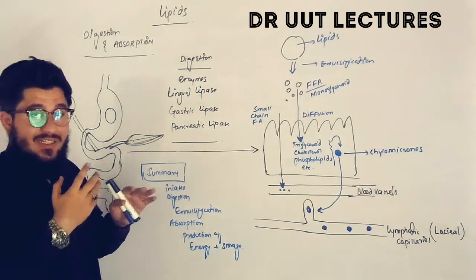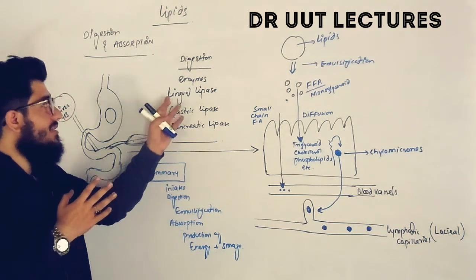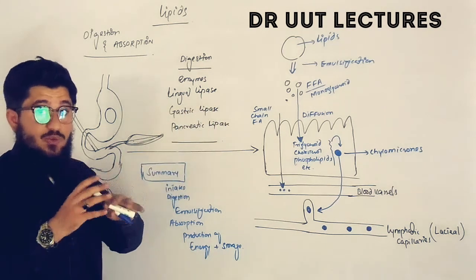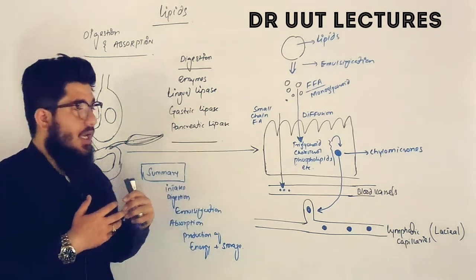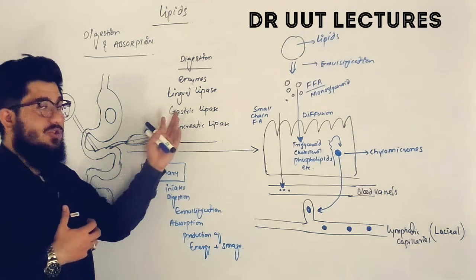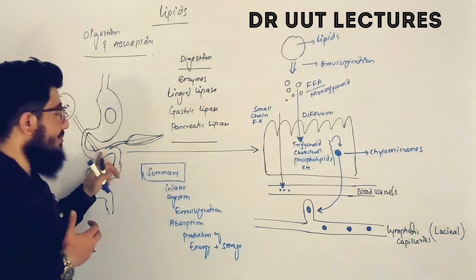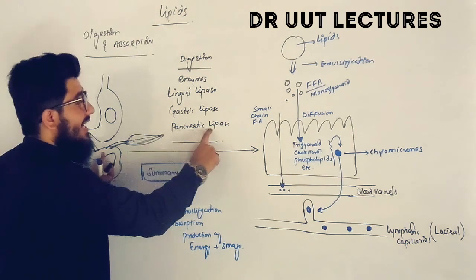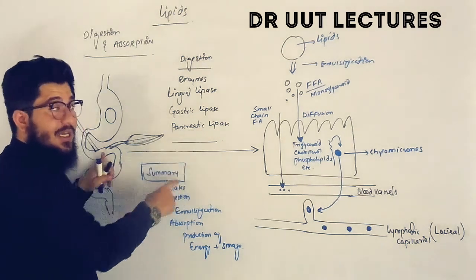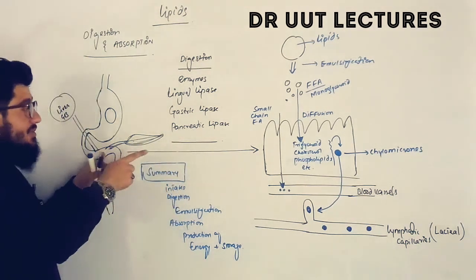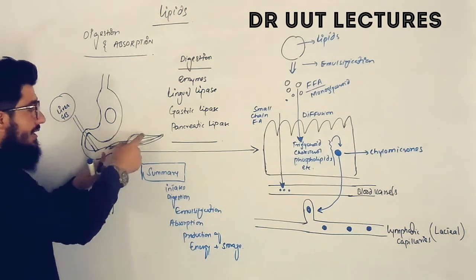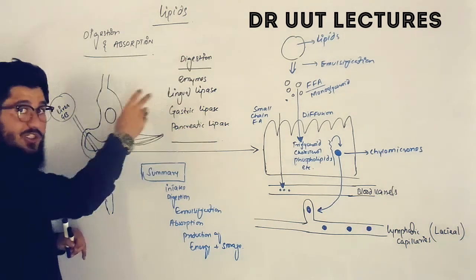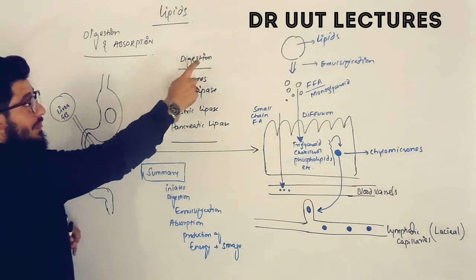In the mouth, we have digestive enzymes known as lingual lipase — these are the enzymes that act on lipids. In the gastric region, we have gastric lipase. And in the small intestine, there is an enzyme known as pancreatic lipase. These pancreatic lipase enzymes are actually secreted by the pancreas into the small intestine, and these enzymes are responsible for digestion.